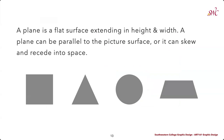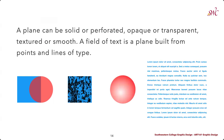We also have planes. For the sake of this assignment, we are thinking of planes as a flat surface extending in height and width. A plane can either be parallel to the picture surface or it can start to skew and recede into space. For this assignment, we're only going to be using perfect squares, perfect equilateral triangles, and perfect circles to articulate these different principles of design. A plane can either be solid or perforated, opaque or transparent, textured or smooth.